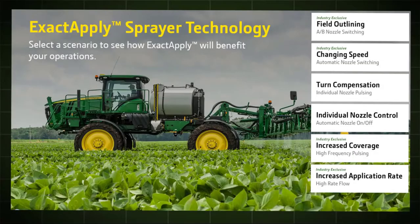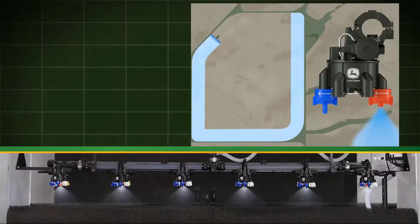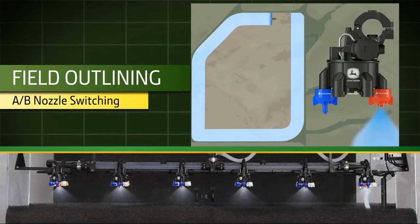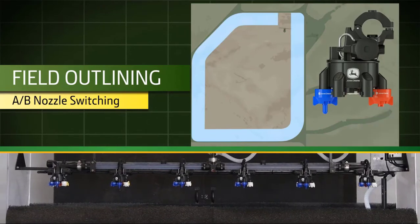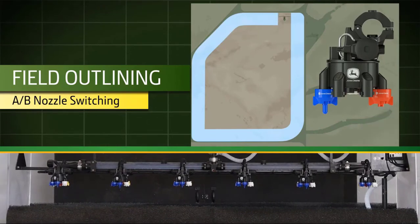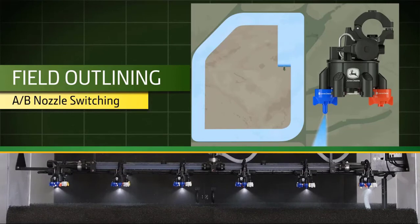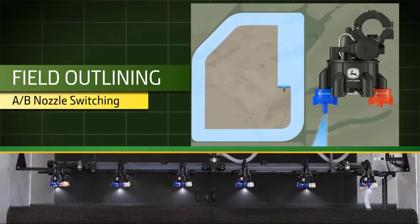Our first example is around that manual A to B switching of nozzles. As you can see in this example, we're outlining the field. This could be a low drift nozzle for applications such as Dicamba. We're going to switch then to the B position nozzle and do the interior of the field, which could be a more conventional nozzle.